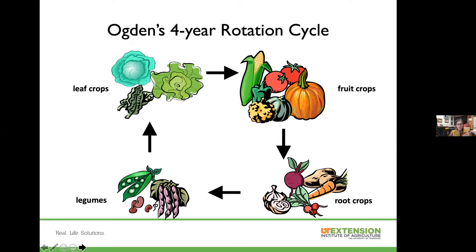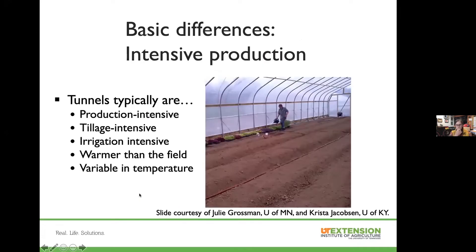Another way to think about rotation is Ogden's four-year rotation cycle, which simplifies things by breaking crops into leafy crops, legumes, fruit crops, and root crops. This gets to different crop families but also to different root structures — leafy crops often have a taproot, root crops have a large root, and fruiting crops and legumes have more significant root systems that create micro-tillage and micro-pores in the soil. They all fill their niche and do important things.